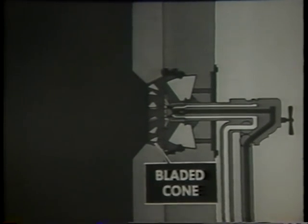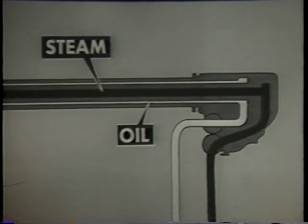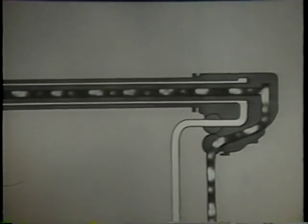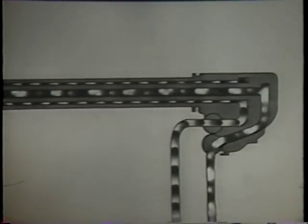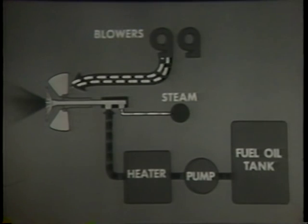The steam atomizing burner is similar in many respects to mechanical atomizing burners. It has an air register with diffuser, bladed cone, and air doors. However, the barrel of the burner has passages for both fuel oil and steam. High pressure steam passes through the central passage in the burner barrel, while oil, under low pressure, passes along outer passages. The steam heats the oil. The steam and oil mix in the sprayer plate, and the mixture passes through openings or jets in the plate and emerges as a fine mist. Meantime, the air from the forced draft blowers is entering the register and mixing with the oil spray.